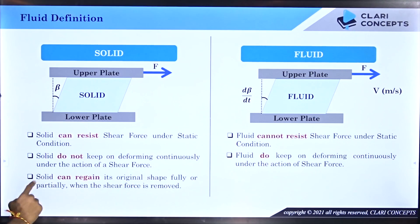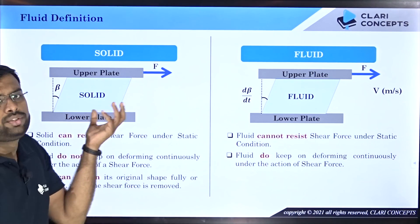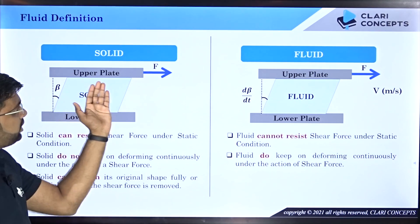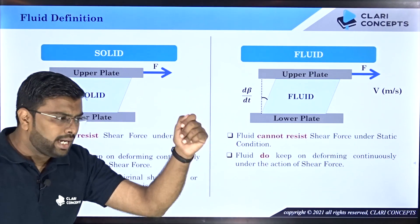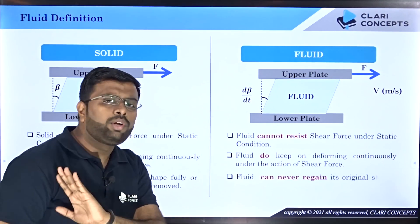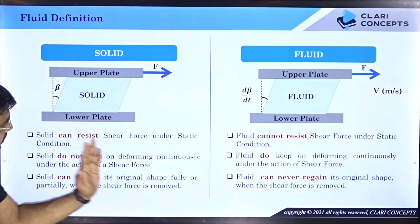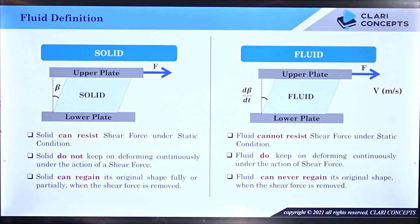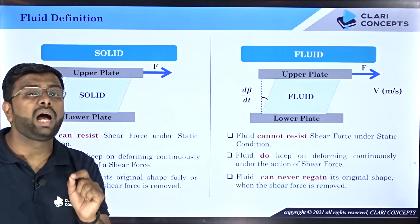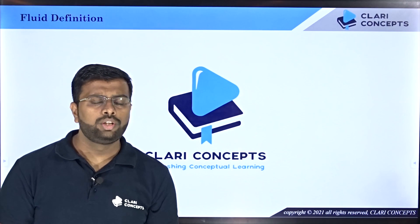Fluids, on the other hand, do keep on deforming continuously, as we have seen. Solids can regain their original shape fully or partially when shear forces are removed — fully if the yield value hasn't been crossed, partially if it has. But fluid can never regain its original shape once shear force is removed. These are the major technical differences between solid and fluid. Fluids are defined as substances that continuously deform under the action of shear force, however small the force may be. Hope to see you soon in the next class — thank you.